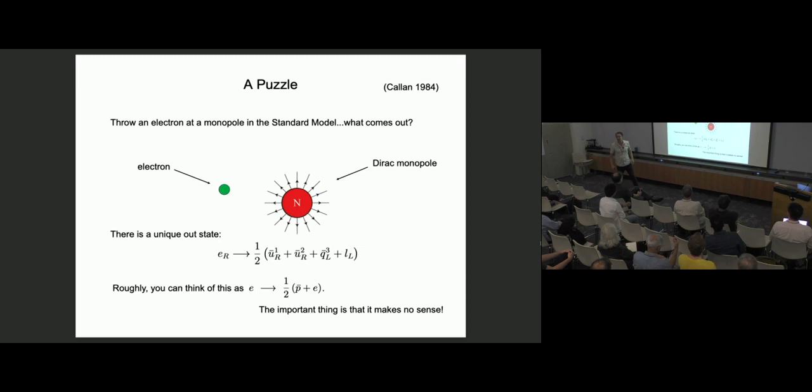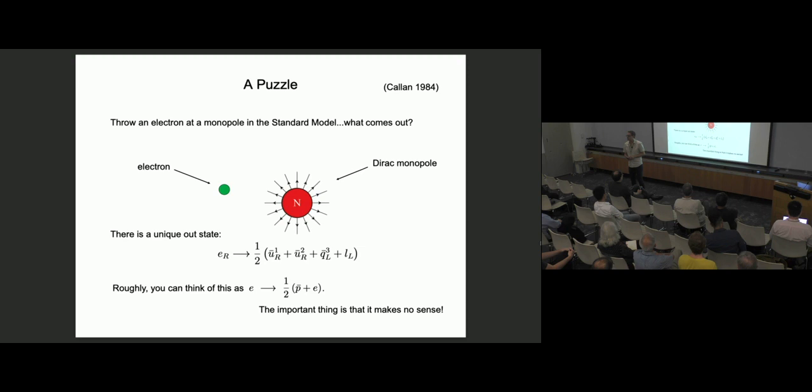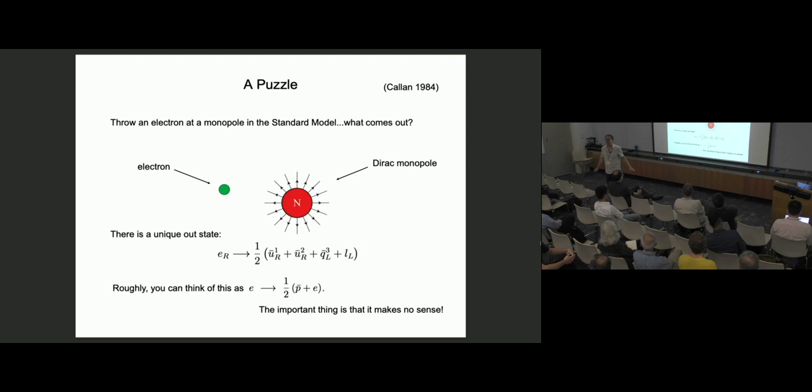Callan showed that if you send in a right-handed fermion, there's a unique linear combination of outgoing modes that have the same quantum numbers. The U's are up quarks, Q is the doublet of up and down quarks — the left-handed doublet — and L is the doublet of leptons. Roughly speaking, he showed that if you throw in an electron, the only thing that can come out consistent with all quantum numbers of the standard model is half an antiproton and half an electron. Roughly speaking.